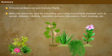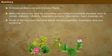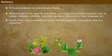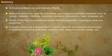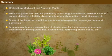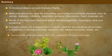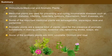Some of the important medicinal plants are ashwagandha, asparagus, aloe, and periwinkle. Aromatic plants are a special kind of plants used for the presence of aromatic substances in making perfumes, essential oils, refreshing drinks, and soaps. Some of the important aromatic plants are mint, citronella, Ocimum, and rose.